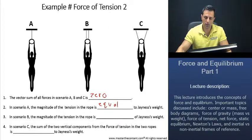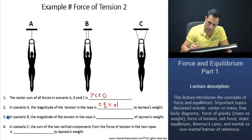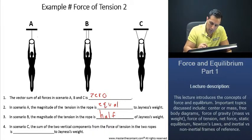Now, let's move on to the next question. In Scenario B, the magnitude of the tension in the rope is what of Janus' weight? Well, in Scenario B, it's actually going to be half of Janus' weight.